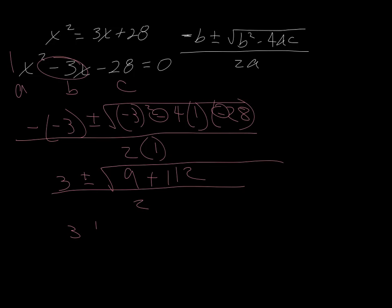So 3 plus or minus the square root of 112 plus 9 is 121 over 2. So the square root of 121 is 11.